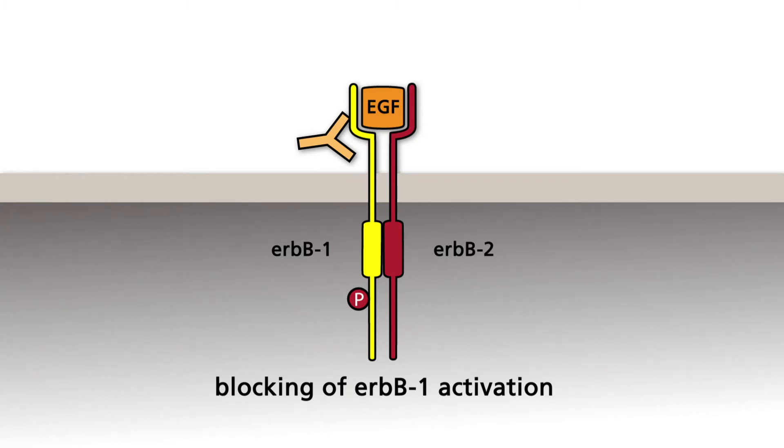In addition, mutations in a protein located in a pathway downstream of the EGF receptor result in resistance to Panetumumab. That is why Panetumumab is used only in the treatment of colon tumors without mutations in the proto-oncogene RAS.